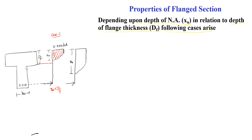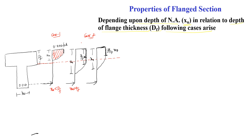Case 2 is when xu is greater than df — the neutral axis lies outside the flange. Within this case there are two sub-cases. In the stress block, the straight (rectangular) portion has depth 3/7 × xu. Case 2a: xu > df and also 3/7 × xu ≥ df — the rectangular part of the stress block is greater than or equal to df. Case 2b: xu > df but 3/7 × xu < df — the rectangular part of the stress block is less than df.